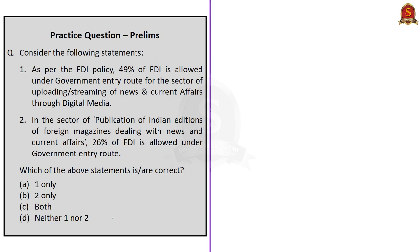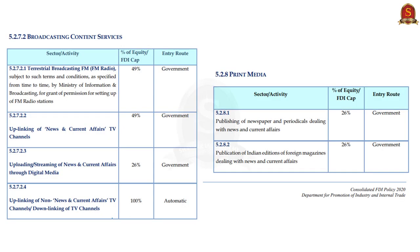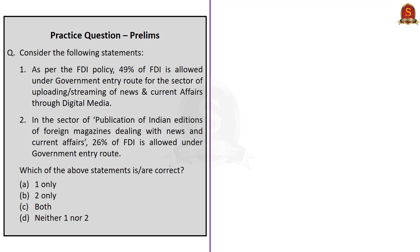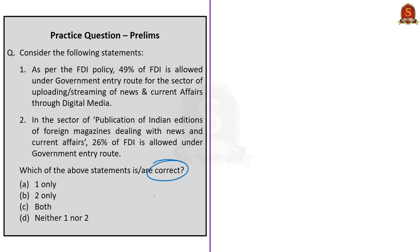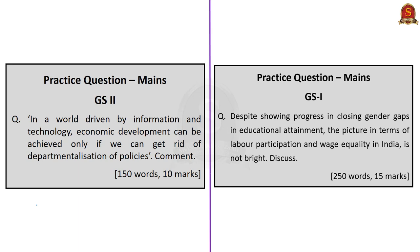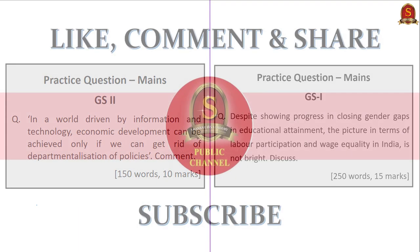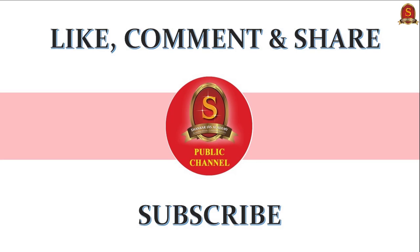The third question relates to FDI. Statement one states that 49% FDI is allowed under the government entry route for uploading or streaming of news and current affairs through digital media—this is incorrect; it is 26%, not 49%. Statement two states that in the sector of publication of Indian editions of foreign magazines dealing with news and current affairs, 26% FDI is allowed under the government entry route—this is correct. So the correct answer is option B, two only. Two more questions remain; please write your answers in the comment section. This concludes today's news analysis. If you like this video, please press like, comment, share, and subscribe to the Shankara IAS Academy YouTube channel.